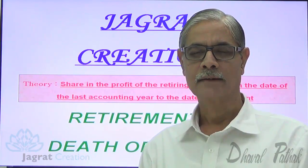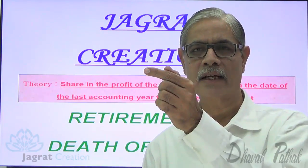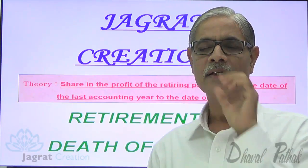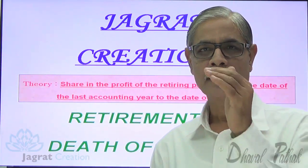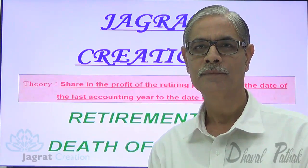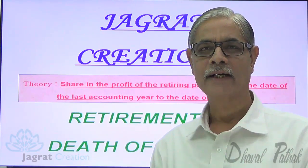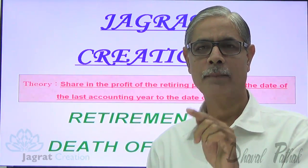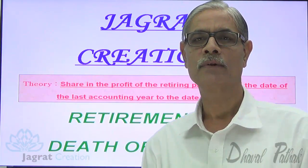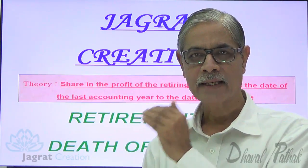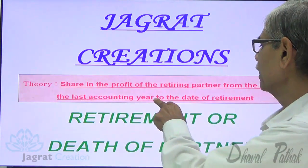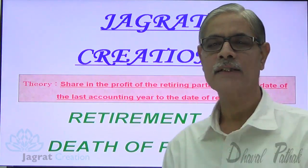The partner retires in between two accounting year-ending dates — he is retiring during the accounting period. We want to find out the share of the retiring partner in the profit till the date of his retirement. For which period? From the last accounting year till the date of retirement. This is what we want to consider.